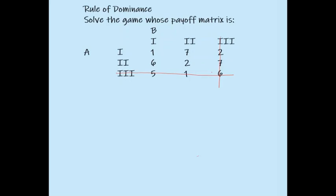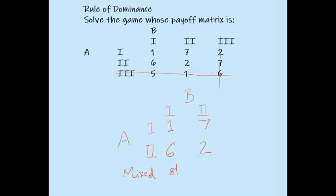Now we are left with a 2 by 2 matrix with values 1, 7, 6, and 2, where B has the first and second strategies and A has the first and second strategies. The given payoff matrix is reduced to a 2 by 2 matrix, and we can use the mixed strategy approach to solve this 2 by 2 game.